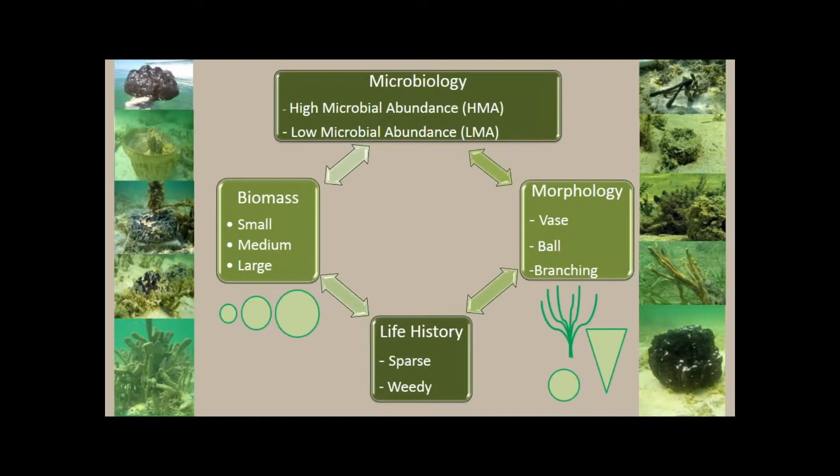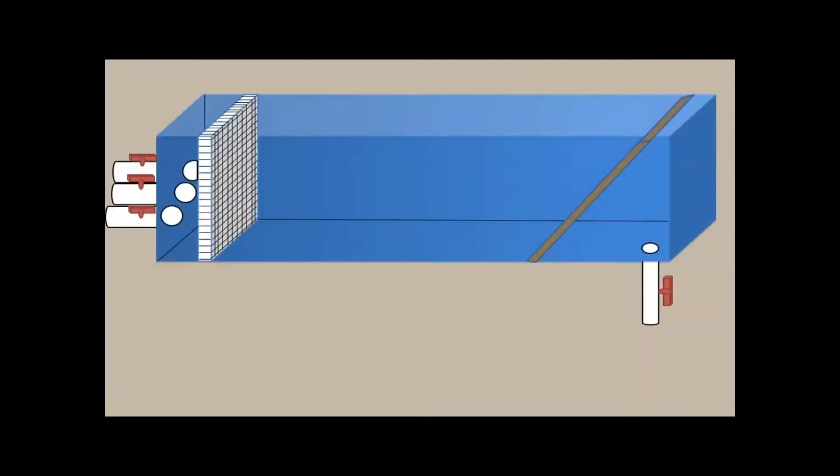I selected 10 species of sponges for this experiment and I wanted a wide variety of functional traits. So I selected sponges that were both high microbial abundance and low microbial abundance, had terminal biomasses that were either small, about the size of a golf ball, or large, around the size of a truck tire. Sponges of variety morphologies, so vases, balls, branchings, volcanoes, and then sponges with different life histories. So ones that are very sparse and slow growing or those that are weedy.